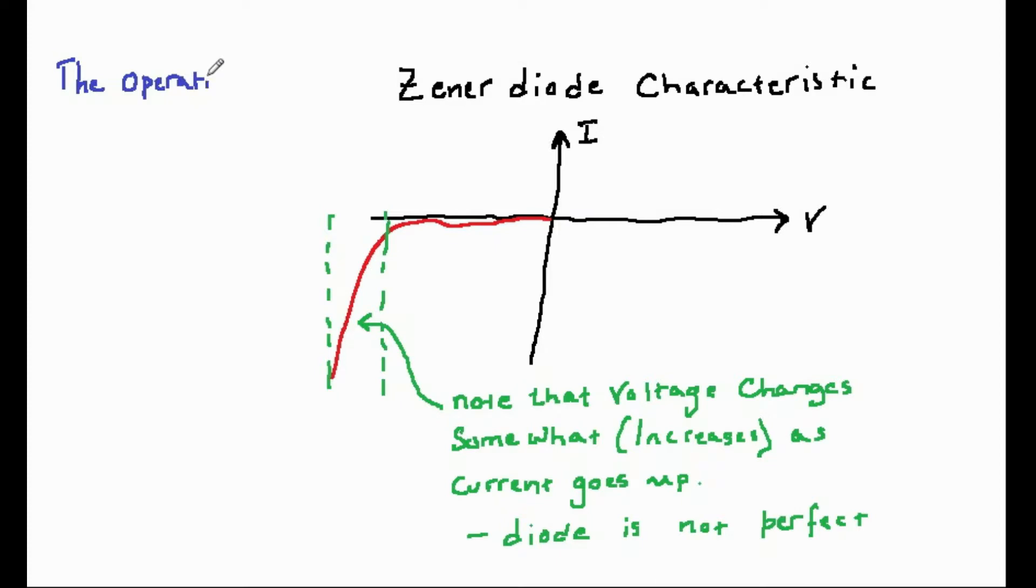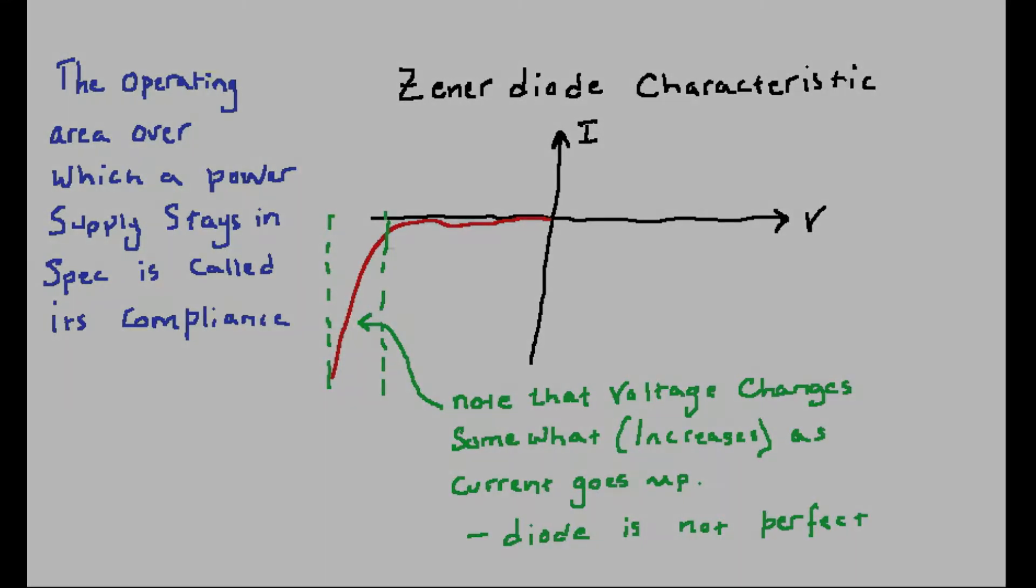One problem with a simple zener diode regulator is that the voltage does vary somewhat as current demand changes, because the slope of the breakdown diode curve is not completely vertical. We can get around this with a circuit which is shown on the screen.